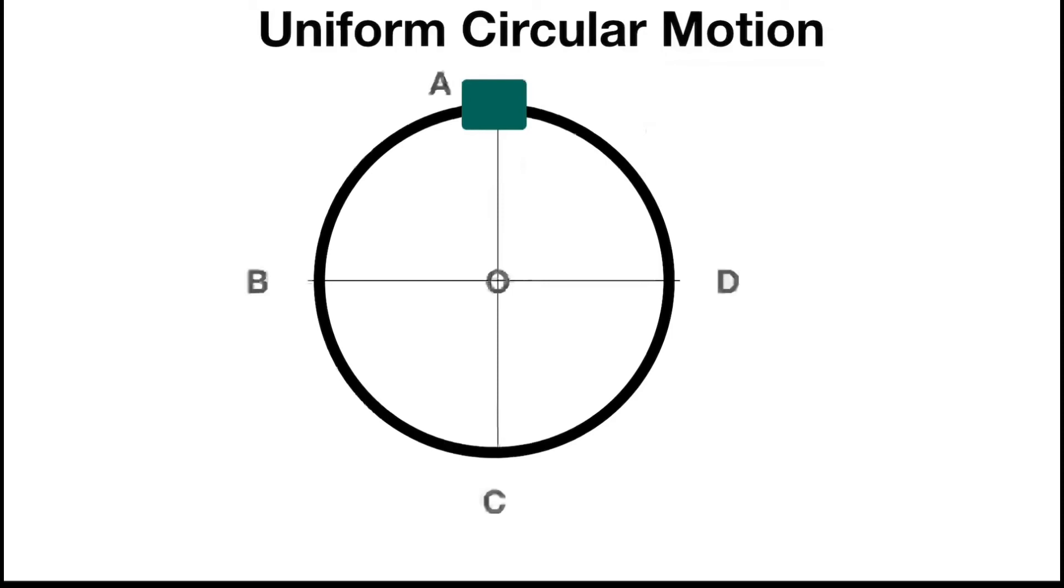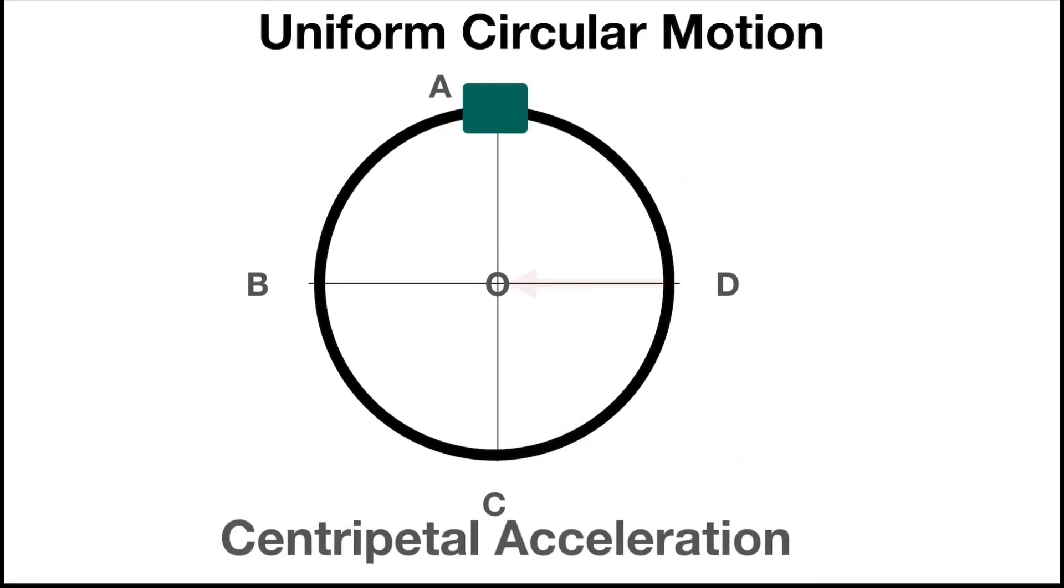At the point A, when this object passes through point A, the acceleration is in the direction of AO. When it passes through B, the acceleration is BO. It's always towards the center of the circle, in any location of this object on this circle. So this acceleration is known as centripetal acceleration. In this constant speed motion, this is happening because of continuous direction change.